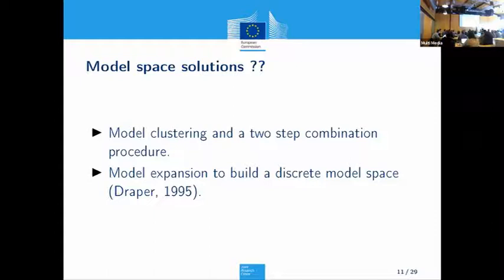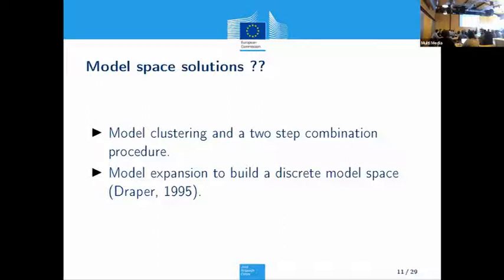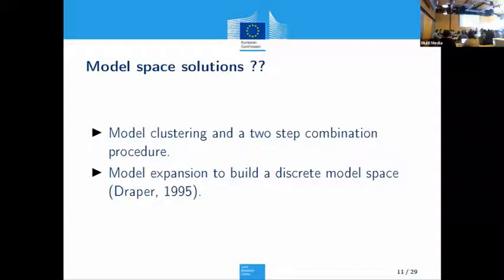The solutions we're talking about now: one option is a clustering process. You run whatever models you want, then use some clustering process to allocate those many models to different states of nature. By clustering, we can identify the big boxes that represent different states of nature, and then do weighting in a two-stage process — within the cluster and then across clusters. Sean Anderson did a lot of work on that with Colin Miller at the Seattle meeting, but that work isn't yet ready to be reported.